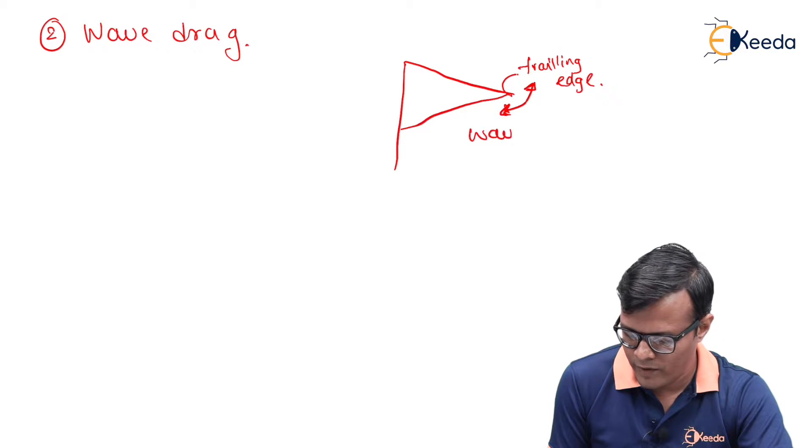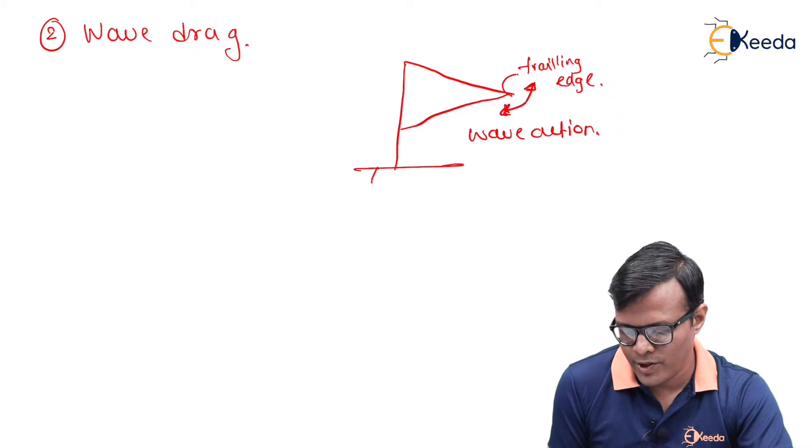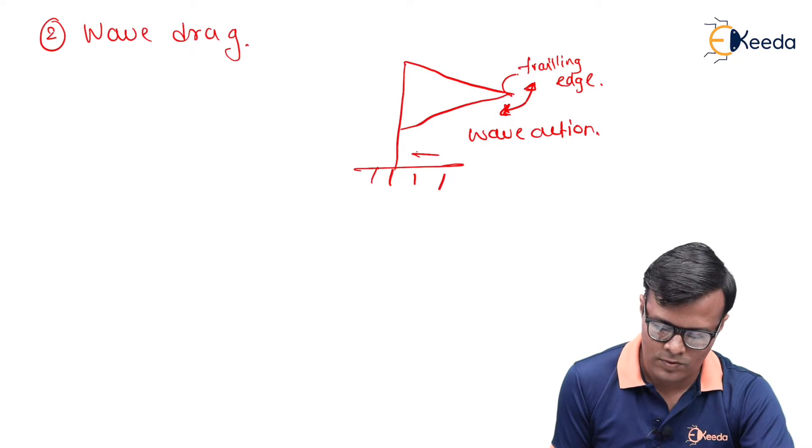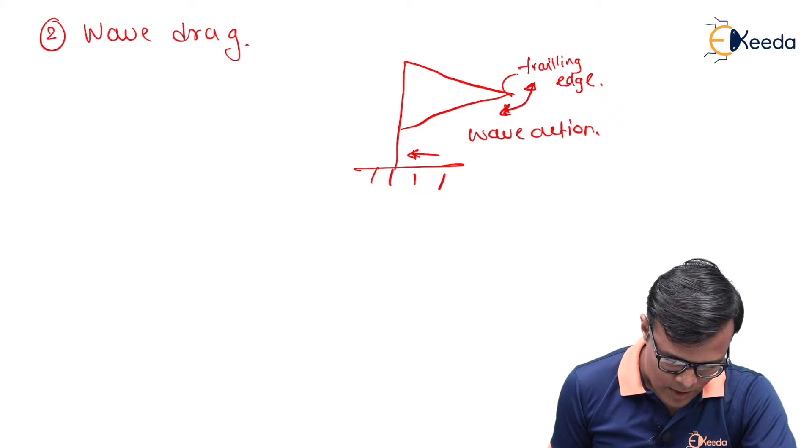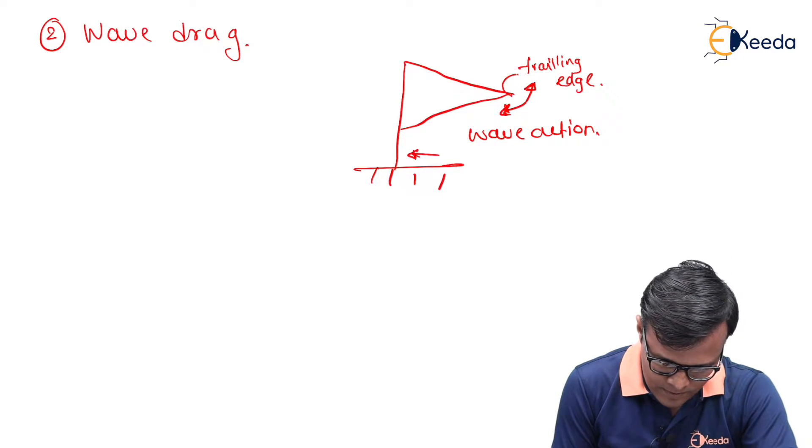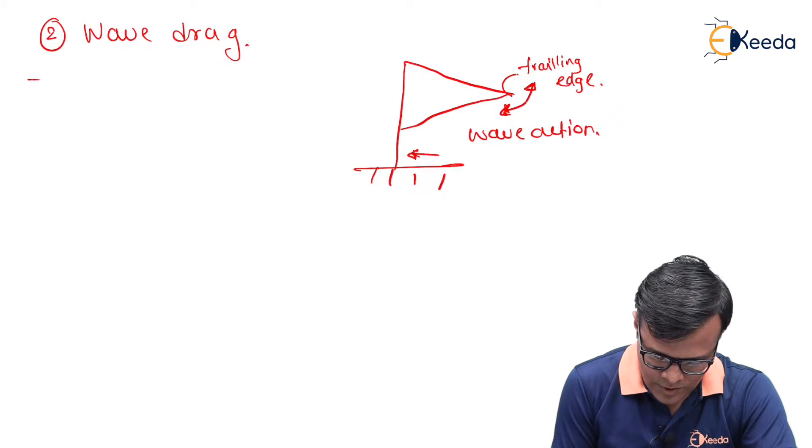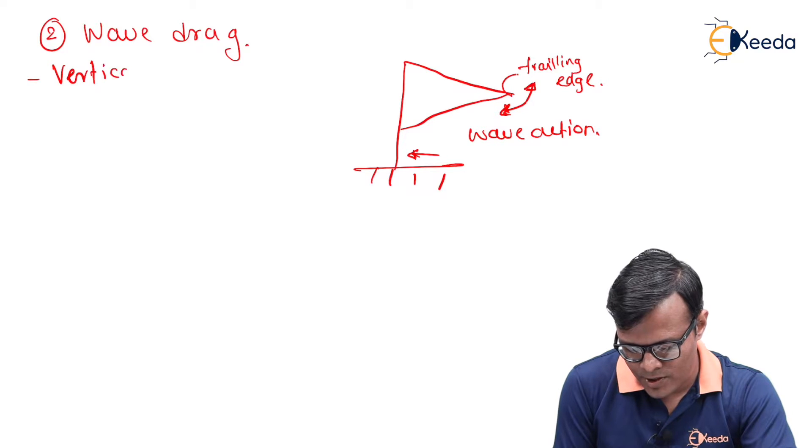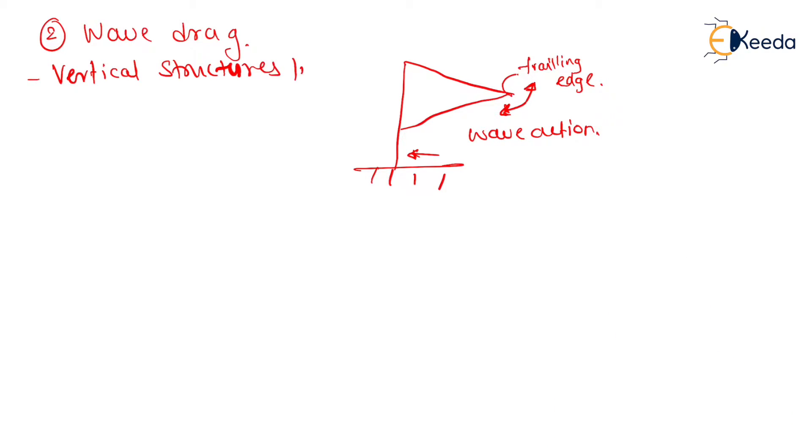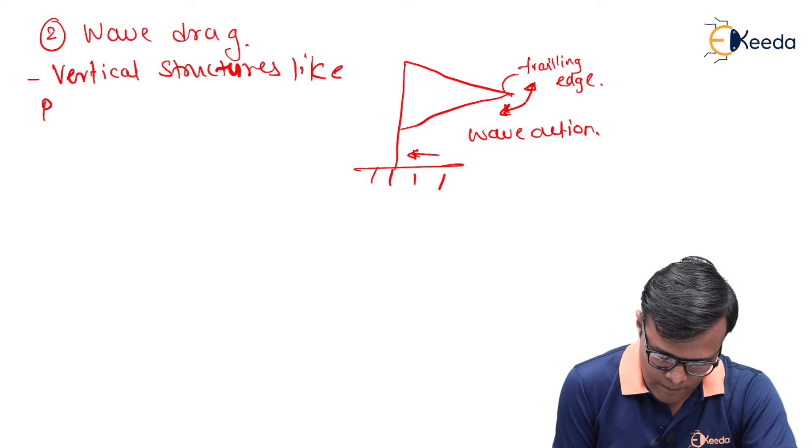So this is nothing but the wave action due to which additional drag is applied on the system. So wave drag is the structure member like vertical structures like pile, piers.